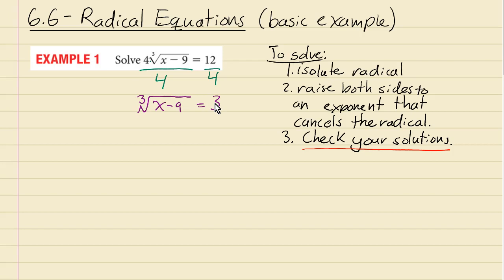So now the radical is by itself. Now if we raise both sides to the power 3, that will cancel out with this. So that's what we're gonna do here: take this to the power 3 and this to the power 3. And the cube root to the power 3 just leaves you with x minus 9, and 3 to the power 3 is 27.